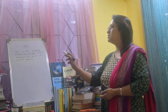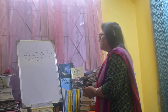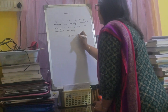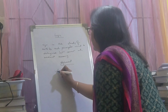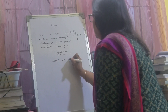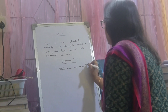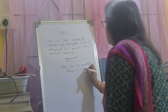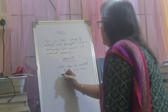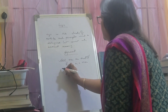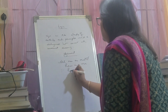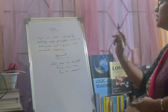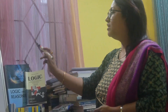Let us see one example of an argument. All men are mortal. Ram is a man. And therefore, Ram is mortal. This is one valid argument.